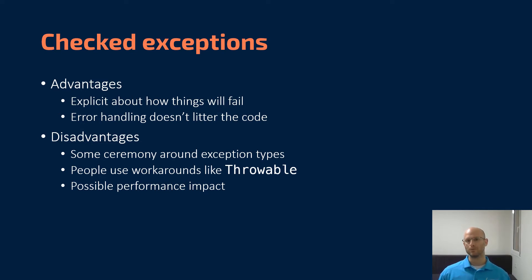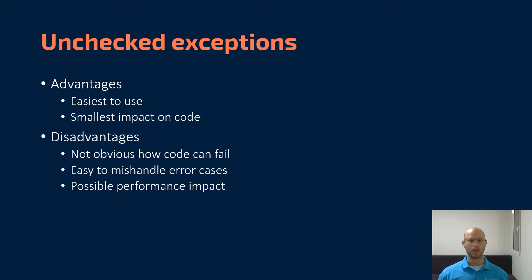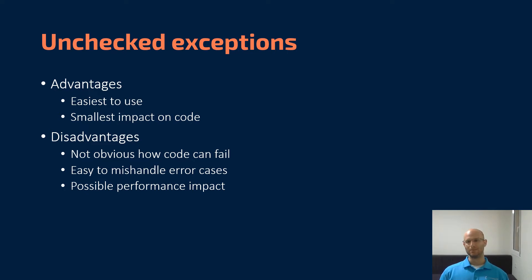There's also a possible performance impact depending on how exceptions are implemented in your language. Unchecked exceptions have the advantage of being the easiest to use of these three techniques. You don't have to think about them much — you simply throw and catch exceptions without listing what they are, so they have the smallest impact on your code. However, the disadvantages are that it's no longer obvious how some piece of code can fail. You can have a function call and have no idea whether it may throw an IOException, an arithmetic exception, or something else. It's easy to miss error cases, forget to free resources, or neglect to give a nice user warning. And like checked exceptions, there may be a performance impact depending on implementation.